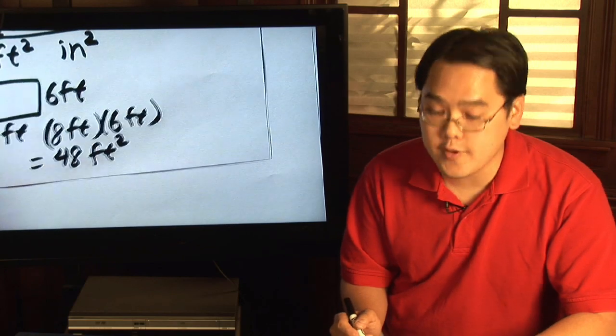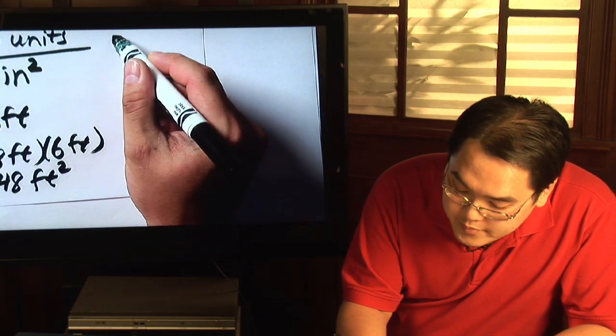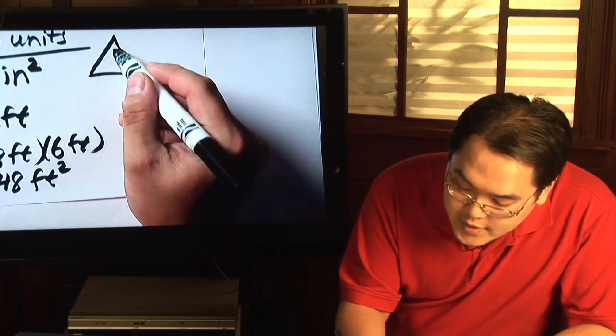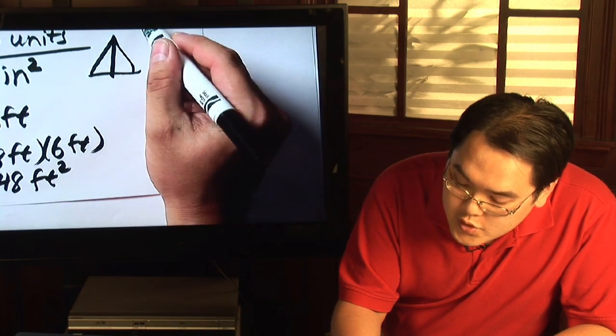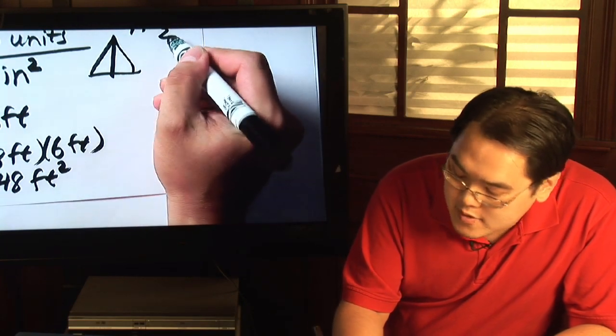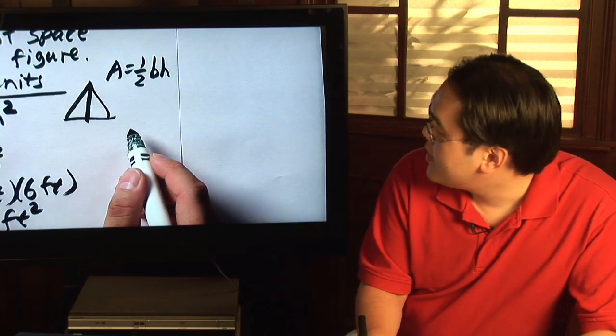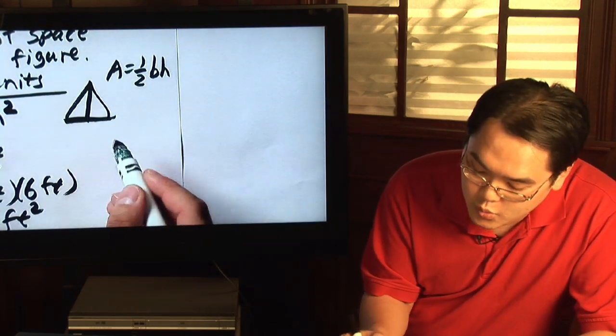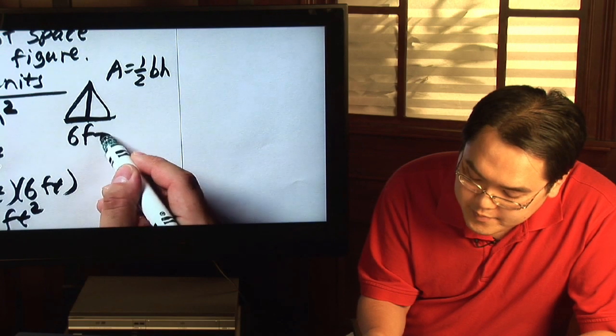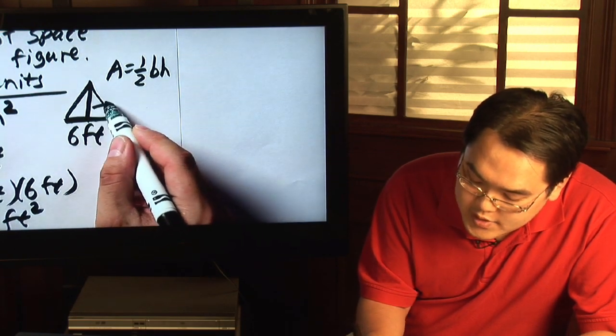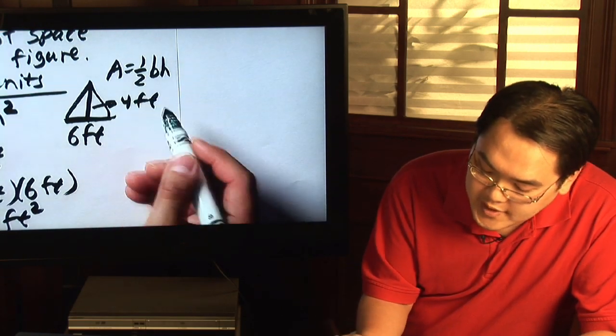Now another formula is that of a triangle. The area of a triangle is one-half base times height. Now let's just say the base was six feet and the height was four feet.